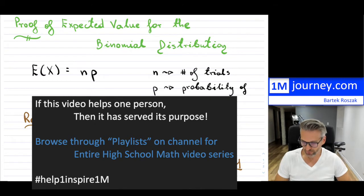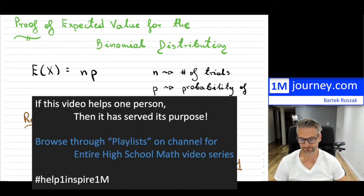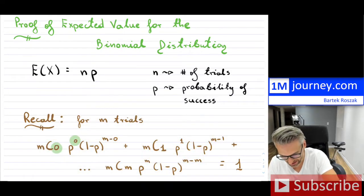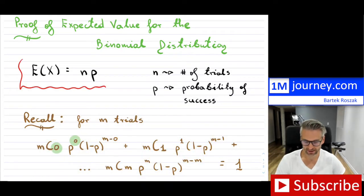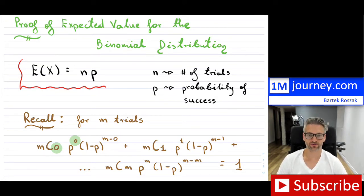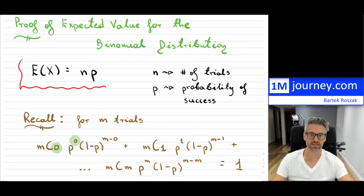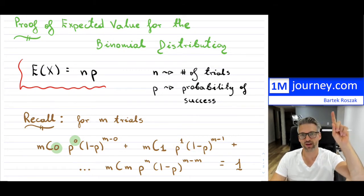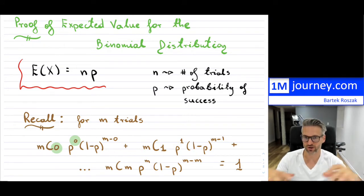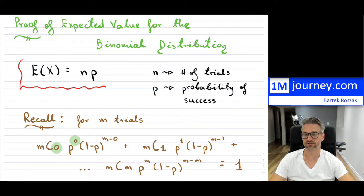Welcome to this one. I want to prove the expected value for the binomial distribution, that it basically is equal to n times p. So n is going to be the number of trials that we have, and p is just the probability of success. If you want an introduction to binomial distribution with some examples, I'll put up a link up above. Here I'm just interested in algebraically showing that the expected value indeed is n multiplied by p.